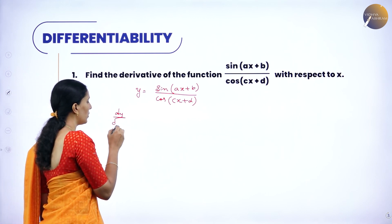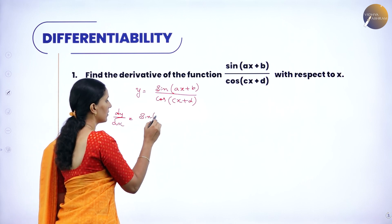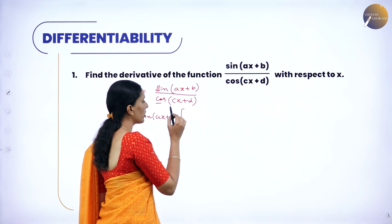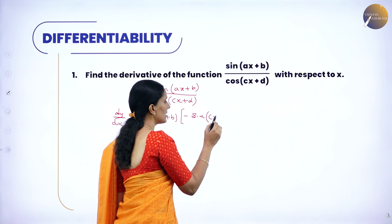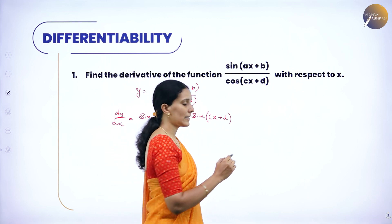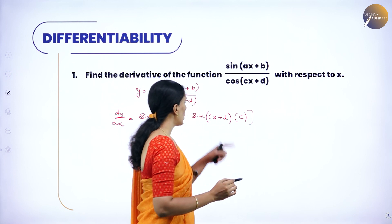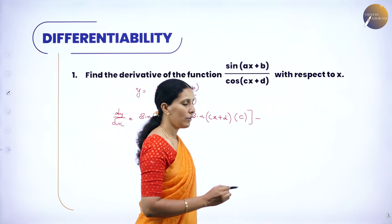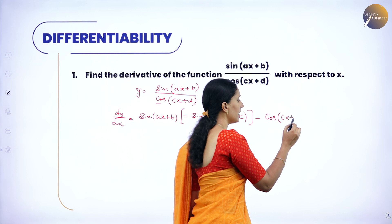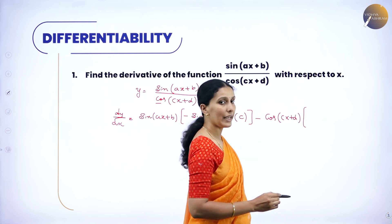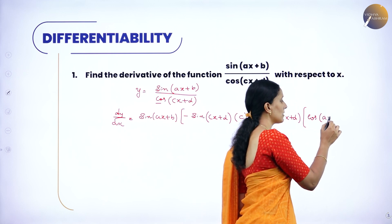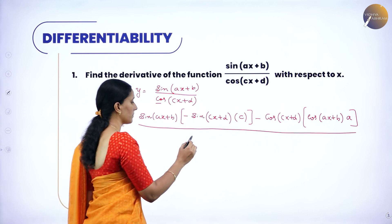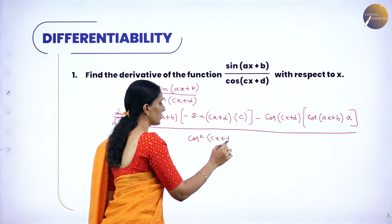So dy by dx is equal to: first function into derivative of the second, that is cos of (cx plus d). When you differentiate cos of (cx plus d), it becomes minus sine of (cx plus d), and again differentiating (cx plus d) we get the constant c, because derivative of x is 1 and derivative of a constant is 0. Again, we get here minus the second function, that is cos of (cx plus d), into derivative of the first. When you differentiate sine of (ax plus b), it becomes cos of (ax plus b) into a, all divided by cos squared (cx plus d), using the quotient rule.